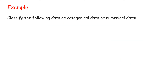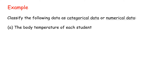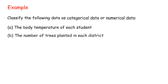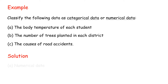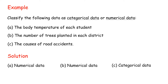Example: Classify the following data as categorical or numerical. A. The body temperature of each student — Numerical data. B. The number of trees planted in each district — Numerical data. C. The causes of road accidents — Categorical data.